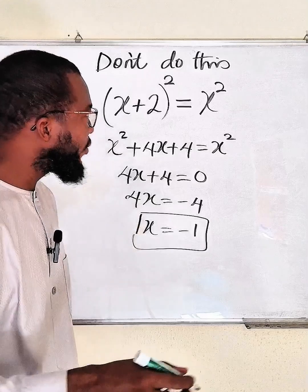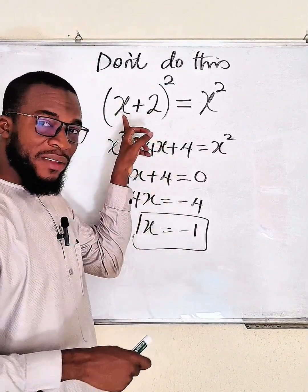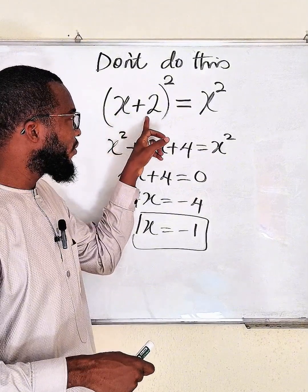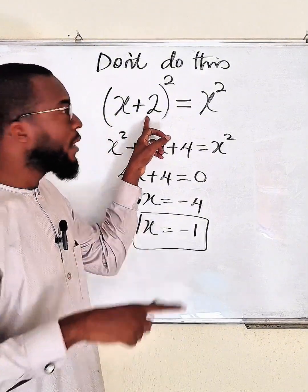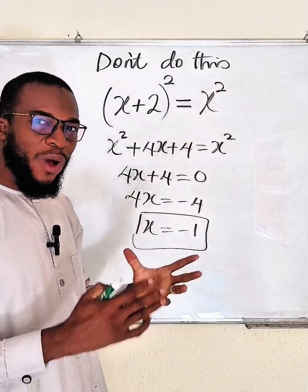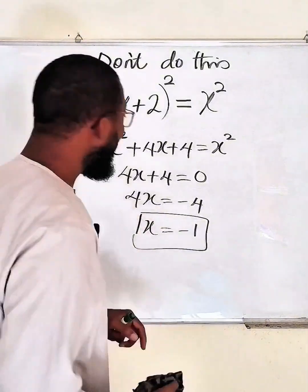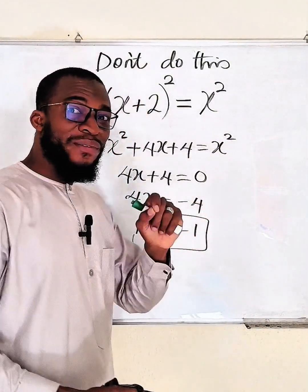And if you like, you can plug it here. If x is negative 1, negative 1 plus 2 will give us 1. 1 squared is 1, then negative 1 squared is 1. So left and right equal, therefore x equal to negative 1.